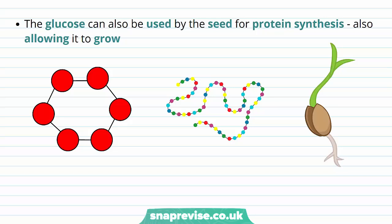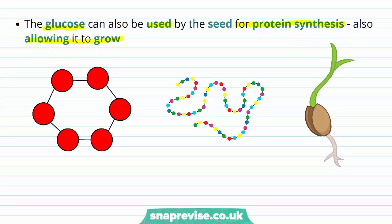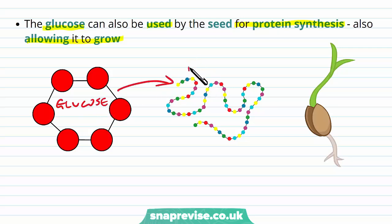As well as this, the glucose released from the starch can also be used for protein synthesis, which is very important for growth. The glucose itself can be converted to amino acids, and amino acids are the building blocks of proteins, which allow growth.